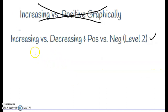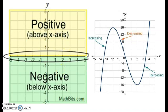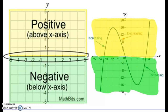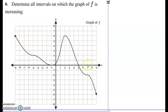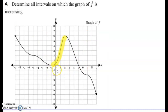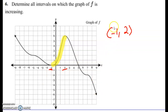Now let's look at increasing versus decreasing and positive versus negative together. Positives are on top, negatives on the bottom. Given this graph, determine all intervals where f is increasing. It's increasing from negative 1 to positive 2 — we only look at the x-values, so the interval is negative 1 to 2, written in parentheses. All questions in this section will use parentheses, not brackets.